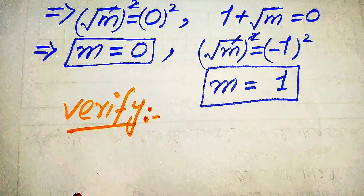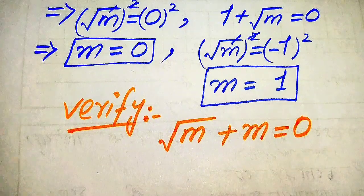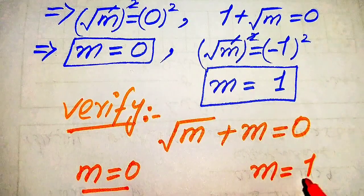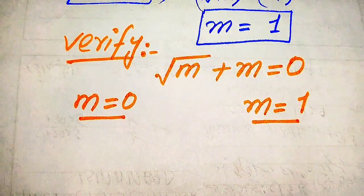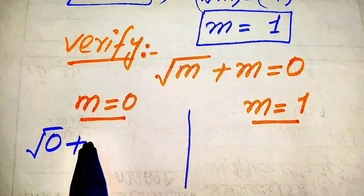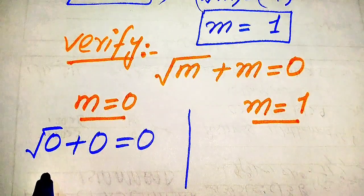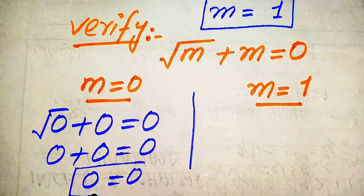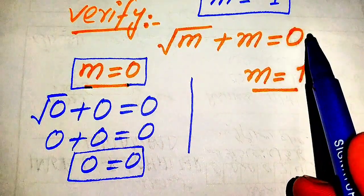Now we verify these two roots to separate the solutions from the extraneous roots. We copy down the given equation: square root of m plus m equals 0. First we verify m equals 0. Substituting into the equation gives square root of 0 plus 0 equals 0, which simplifies to 0 plus 0 equals 0, giving us 0 equals 0.